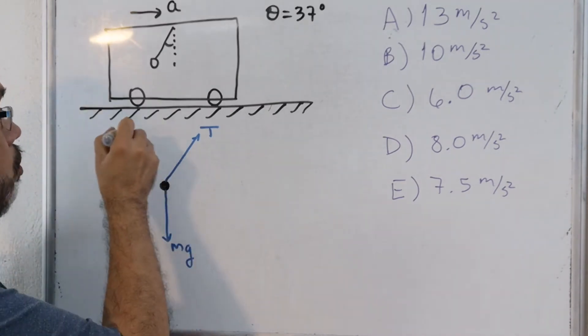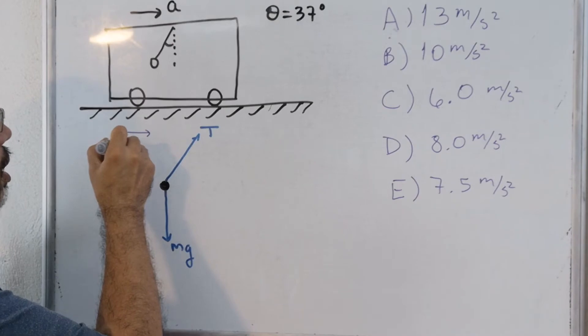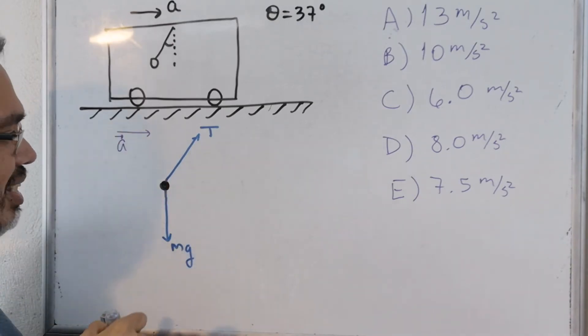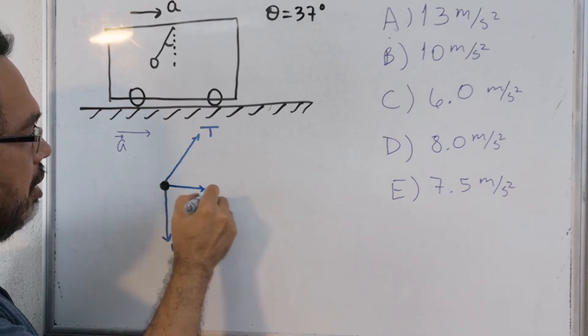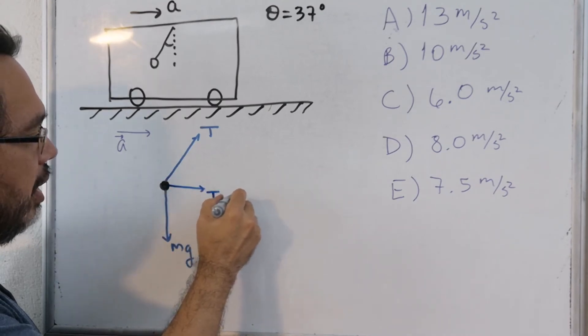Now it is accelerating forward like this, which means that your net force or resultant force is basically the tension along the X axis.